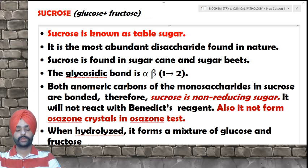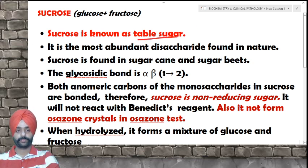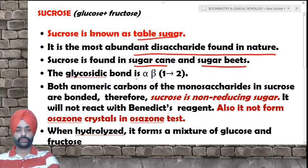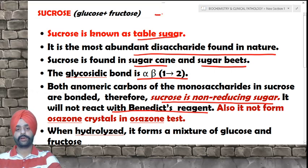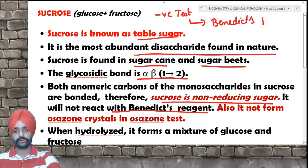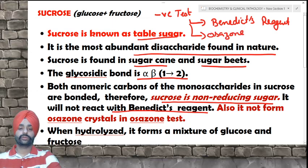Sucrose, also known as table sugar, is the most abundant disaccharide found in nature, mainly in sugarcane and beet sugars. The glycosidic bond is alpha-beta 1,2. Both anomeric carbons of the monosaccharides in sucrose are bonded together; therefore, sucrose is a non-reducing sugar. It will not react with Benedict's reagent and will not form osazone crystals, as it does not contain any free anomeric carbon. Its clinical importance includes dental caries, metabolic checkpoints for diagnosis of obesity, and sucrase deficiency.